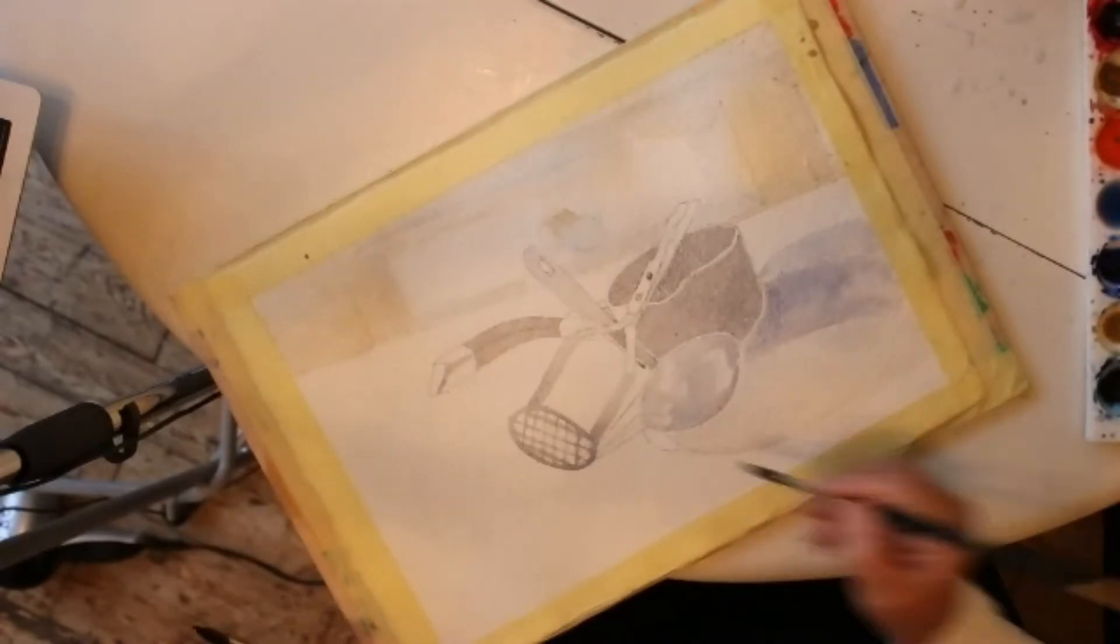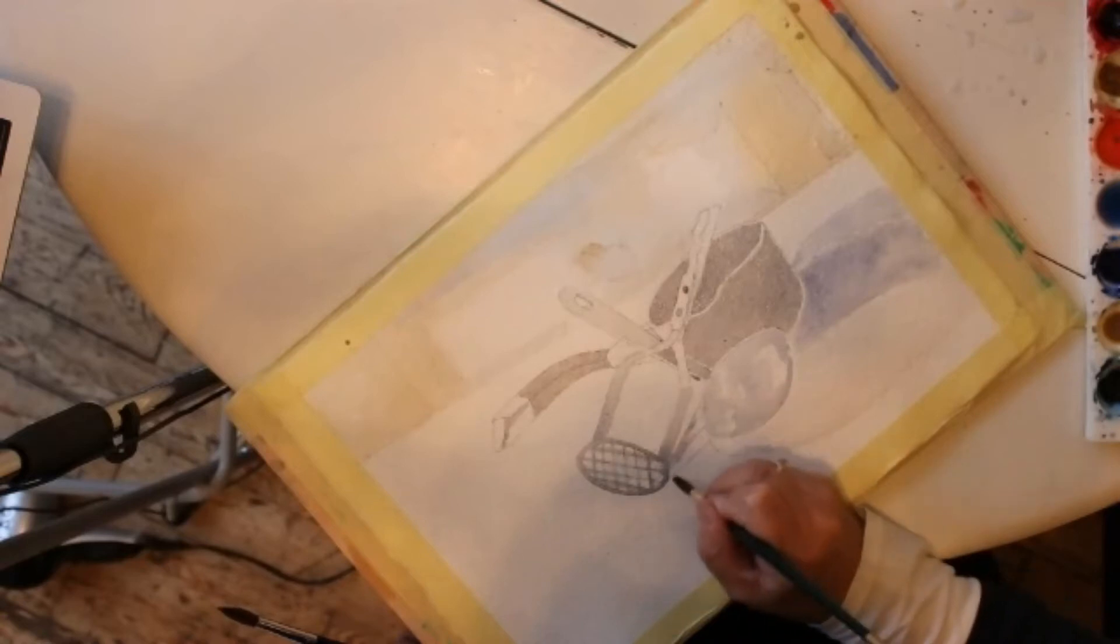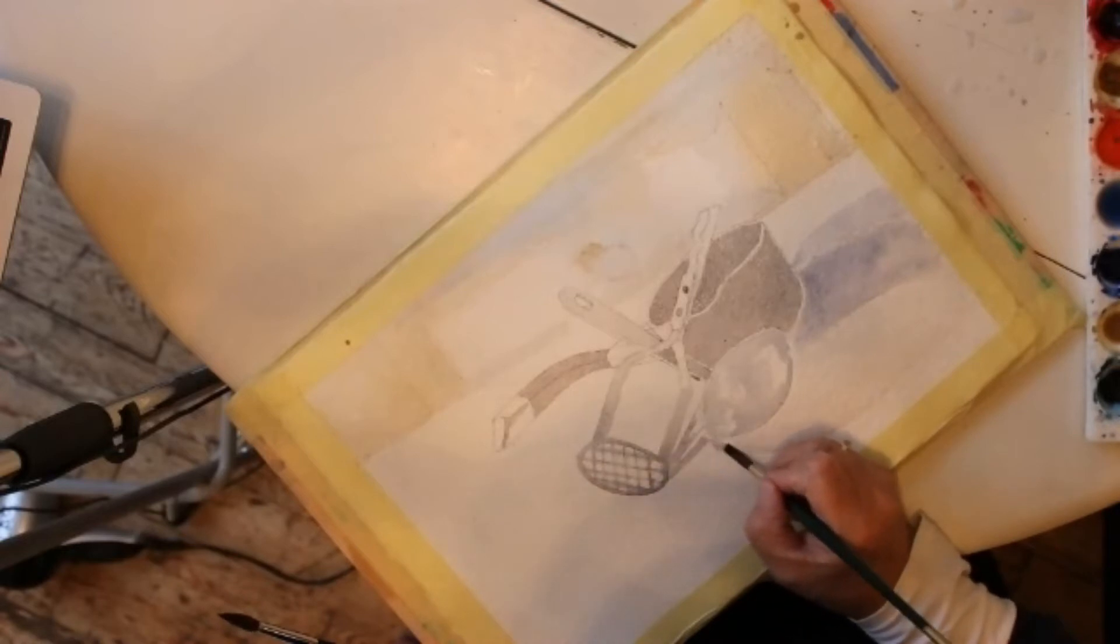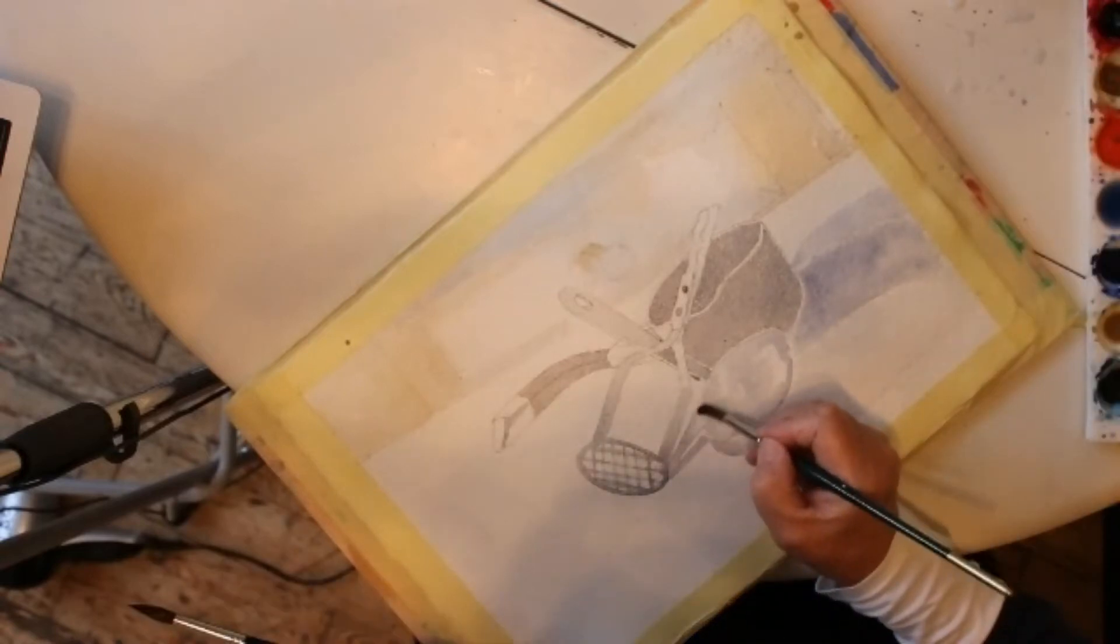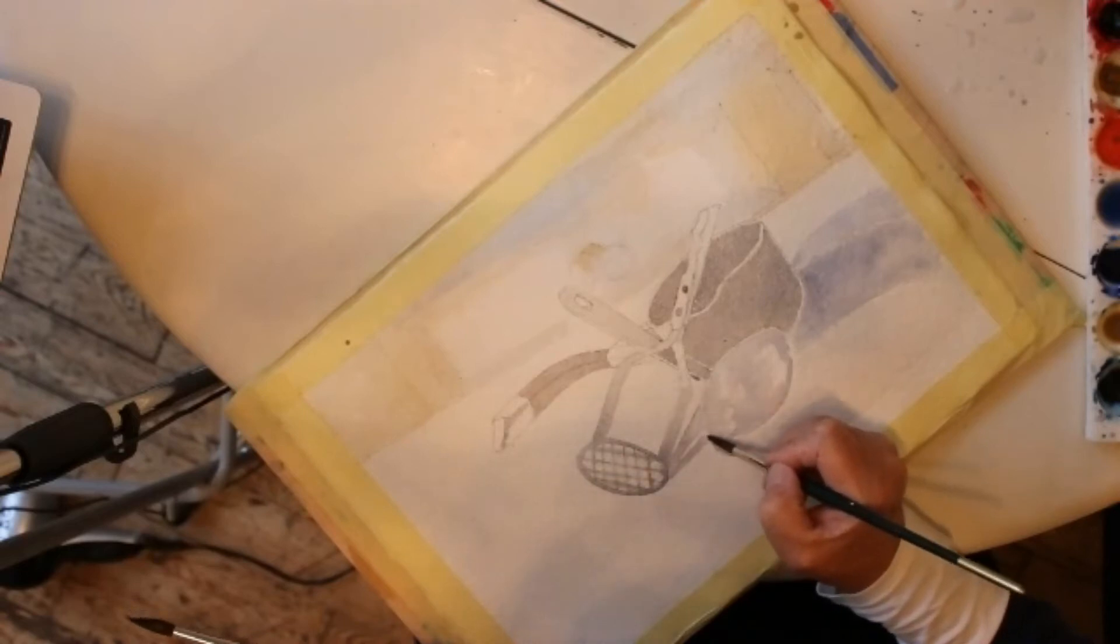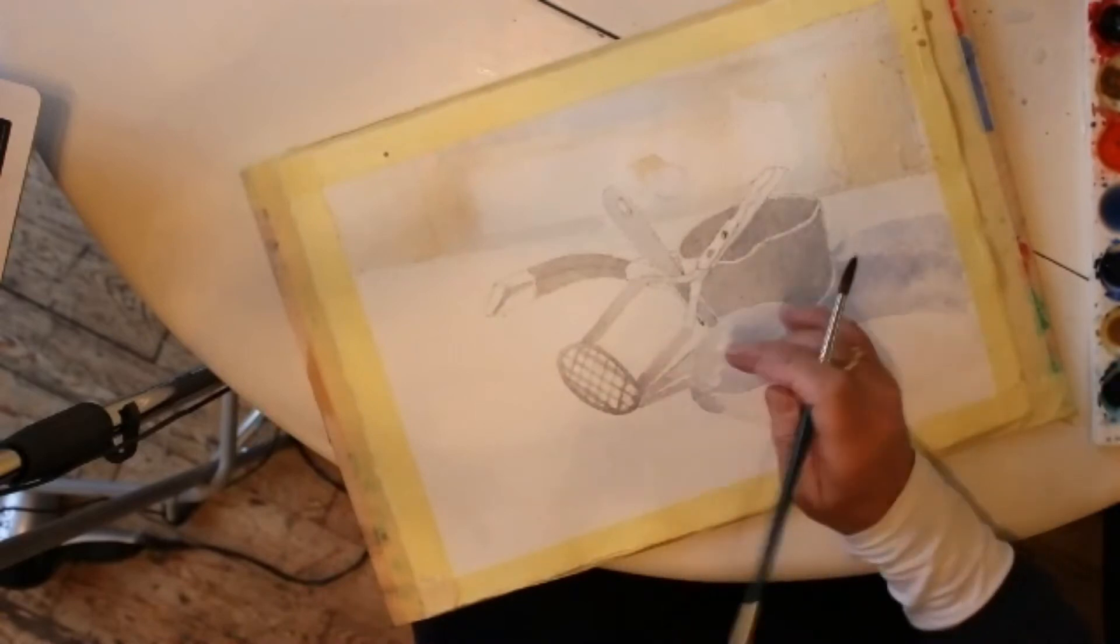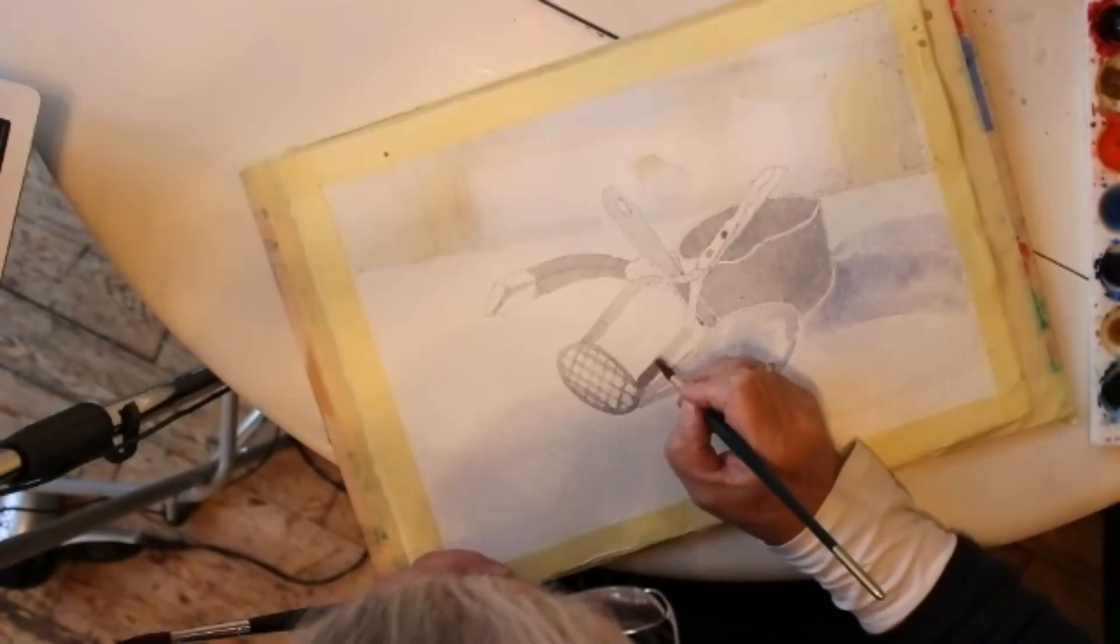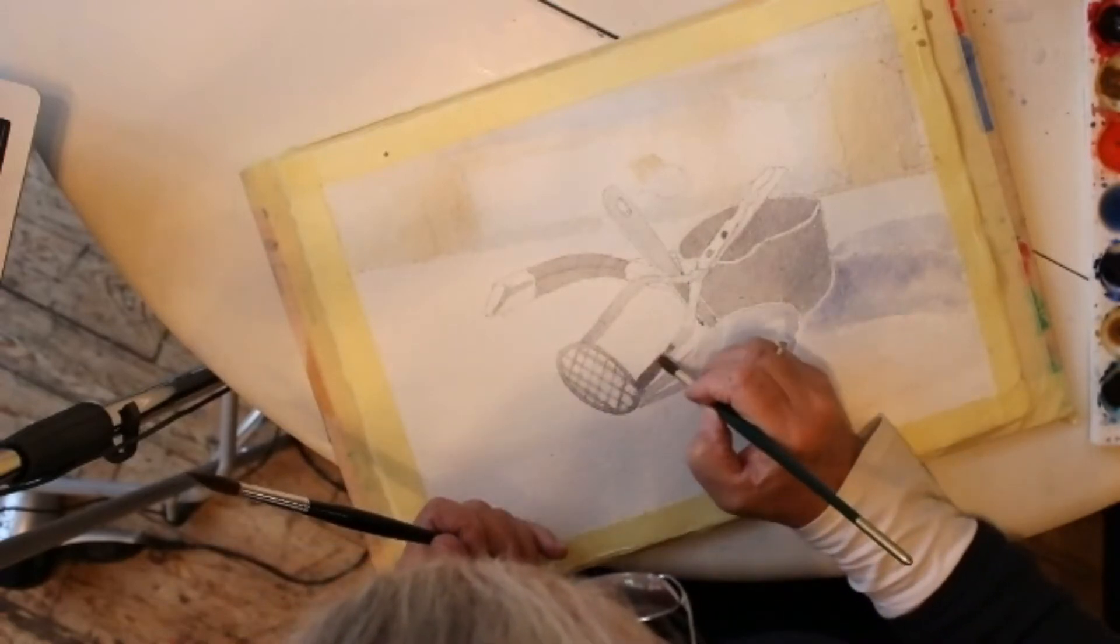More cast shadows from the actual masher and also from the ladle. Again, I'm just softening the edge with water as I take it up to the shape. While I'm waiting for this all to dry, I can probably get back to here. This is nearly dry and I can drop some in.